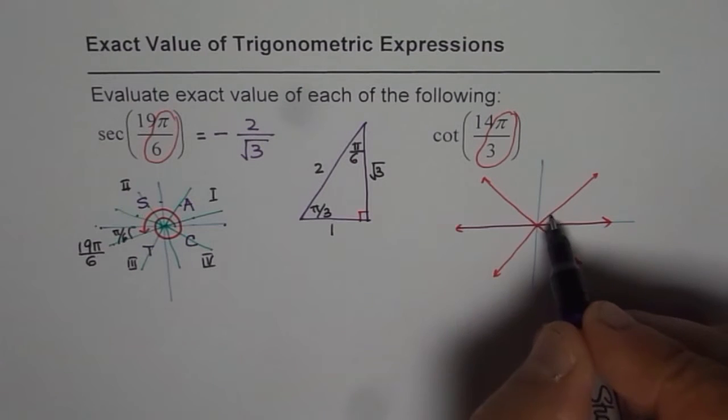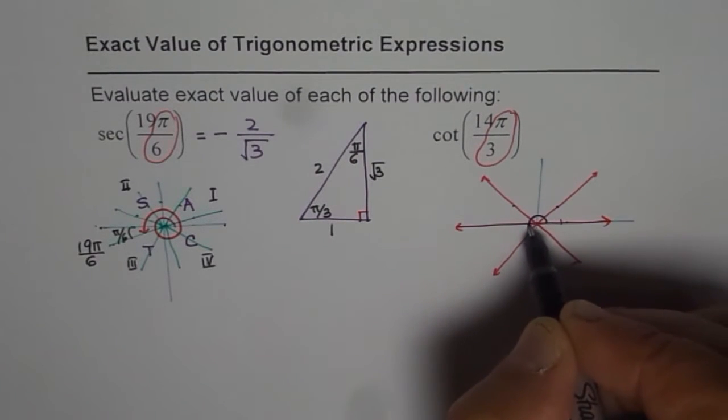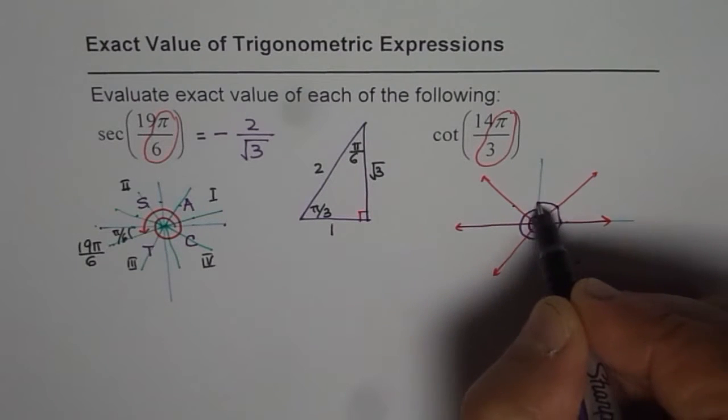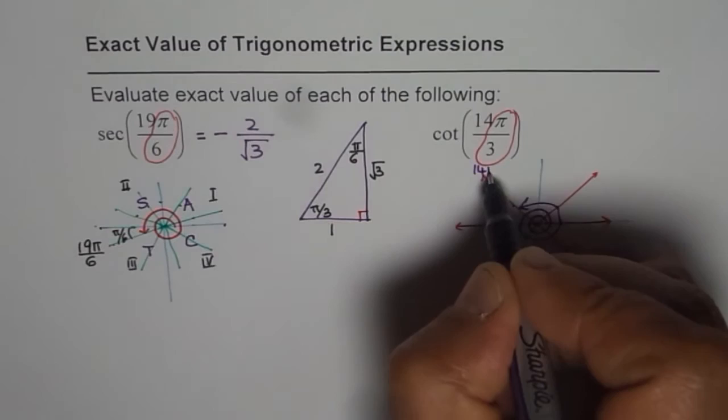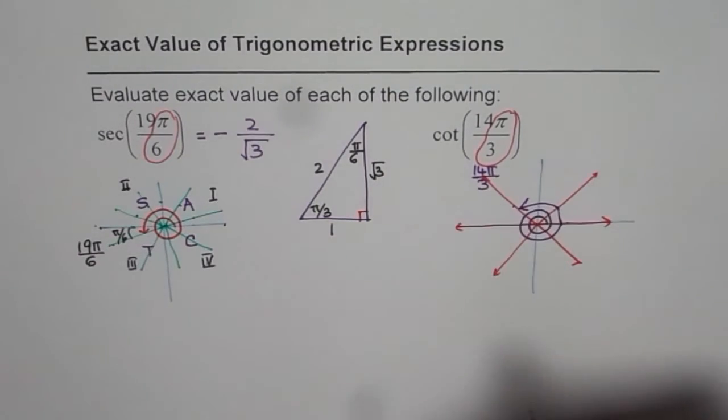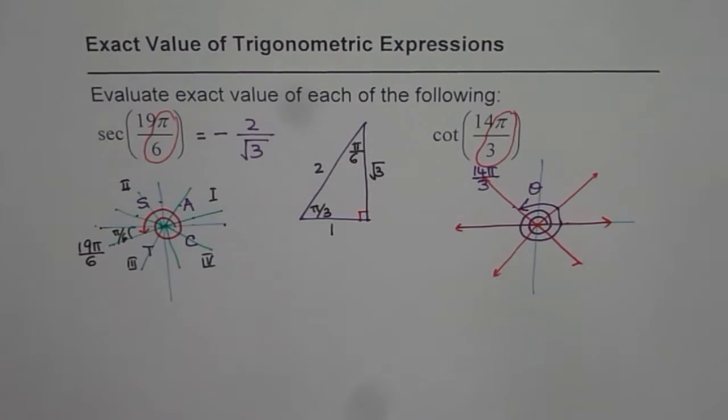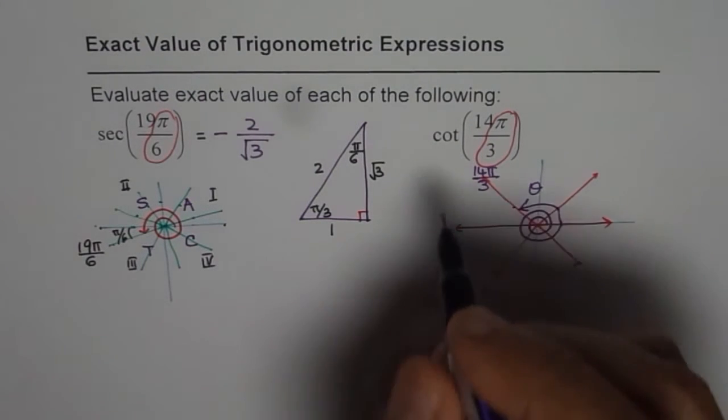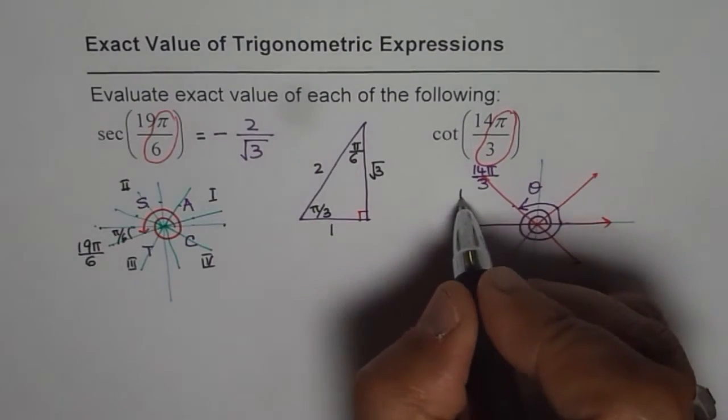Now 14 means what? So 6 and 6, 12, 13, and 14. So it is 6 and 6, 12, 13, 14. So you end up there. So this is 14π by 3. So that angle theta gives you 14π by 3. You are in quadrant 2.